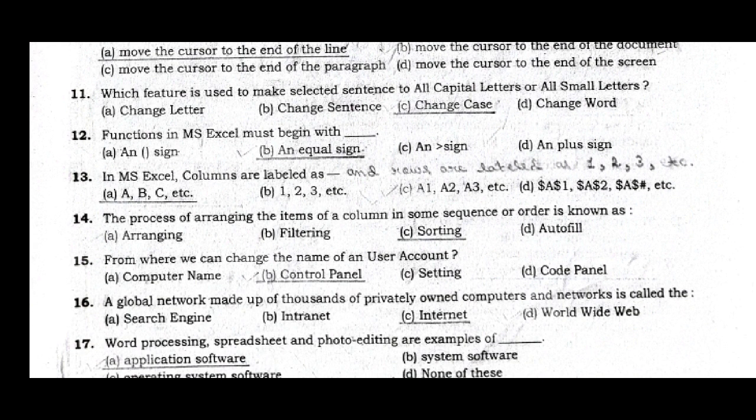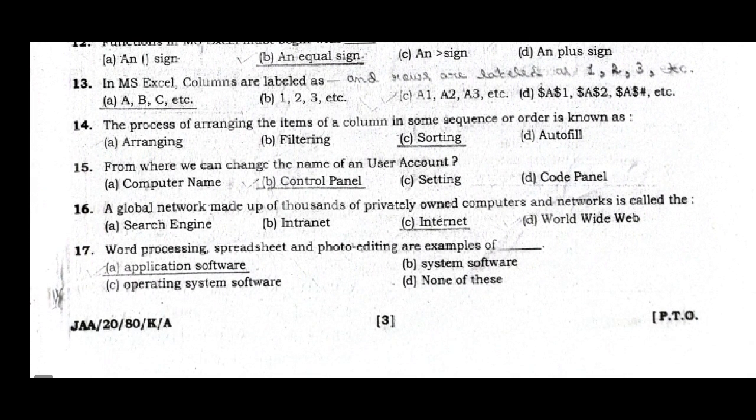Question 14: The process of arranging the items of a column in some sequence or order is known as — answer option C, sorting. Question 15: From where can we change the name of a user account? Answer option B, control panel. Question 16: A global network made up of thousands of privately owned computers and networks is called — the correct answer is internet.